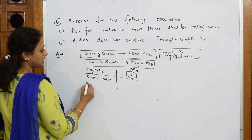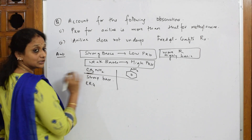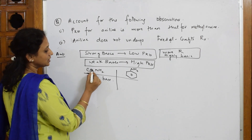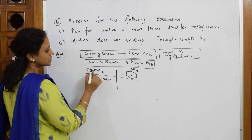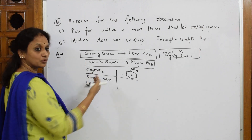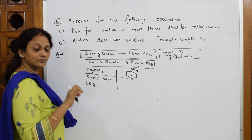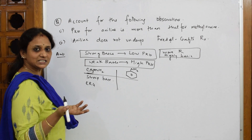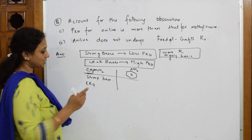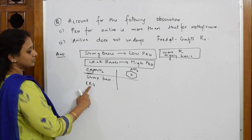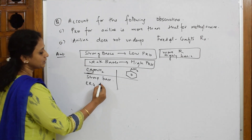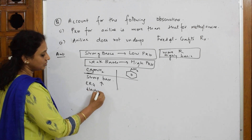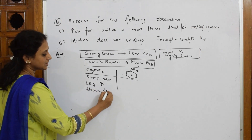Why is methylamine a strong base? Because of the electron-releasing methyl group. It releases electrons, so the electron cloud becomes more and more. When electron cloud increases, it easily donates electrons — hence it is basic. Electron-releasing groups increase electron density.